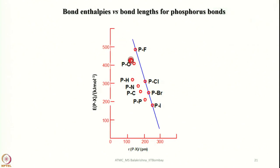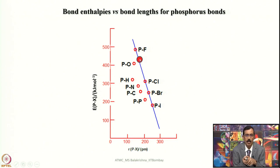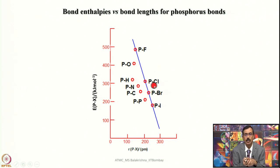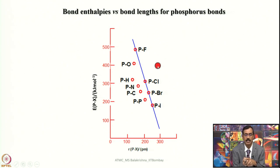Now we should look into bond enthalpies. Phosphorus–fluorine bonds are quite strong, whereas phosphorus–iodine bonds are very weak. PCl and PBr bonds can be handled nicely; in fact PBr₃ is also used as a brominating agent in organic chemistry. The most appropriate and economical compounds are phosphorus–chlorine compounds — having three chlorine atoms on phosphorus, i.e., phosphorus trichloride. PCl₃ has optimum properties; one can perform nucleophilic substitution reactions using lithium reagents or Grignard reagents to generate desired phosphorus compounds with desired steric and electronic attributes.